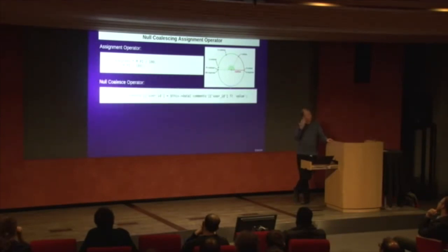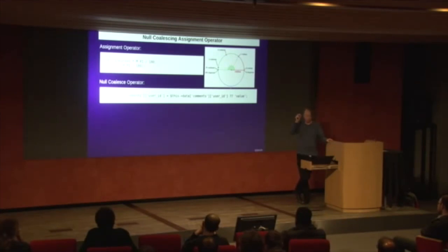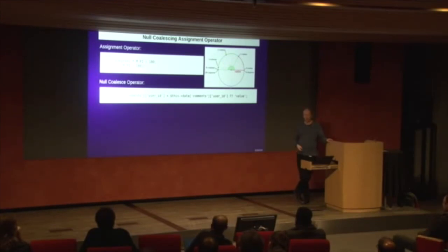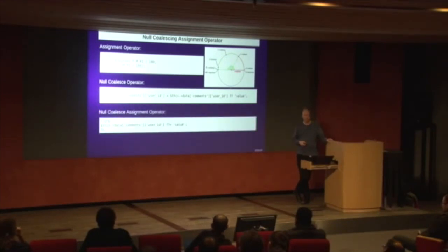The null coalesce operator allows you to use a default value if the first argument before the question mark is null — which is lovely, but as you can see in this contrived example, you still have to spell out the full key elements to the data you're modifying twice, which is kind of annoying. So you can guess what a null coalescing assignment operator is — it's the marriage of both two. Kind of neat.